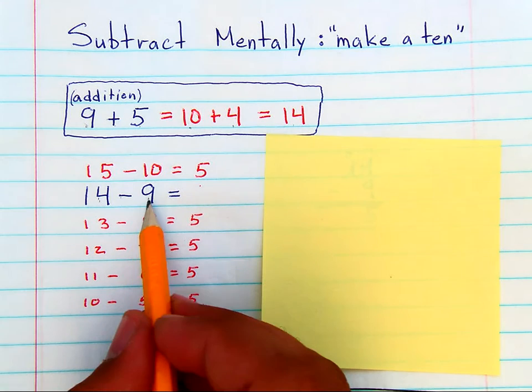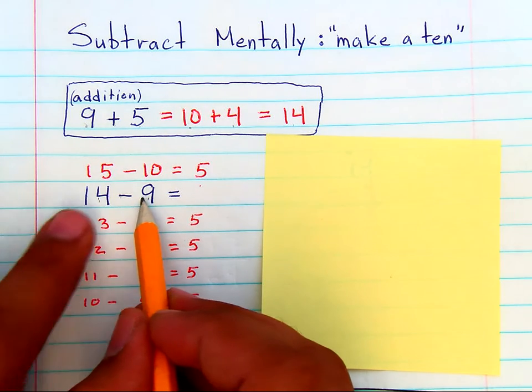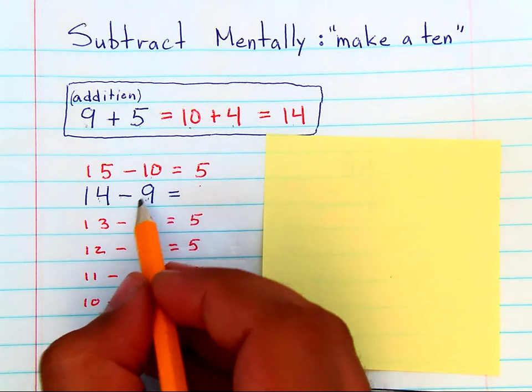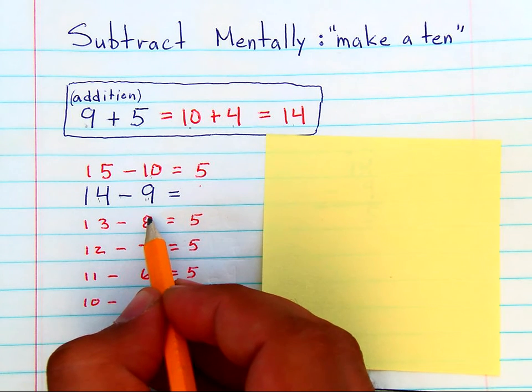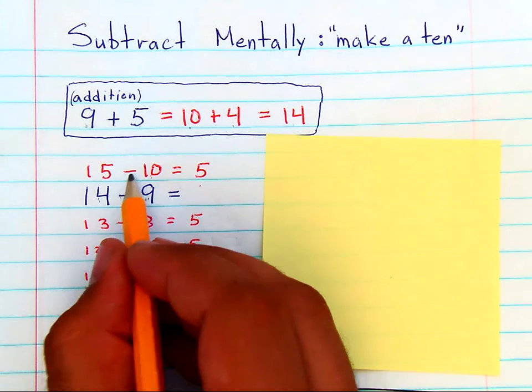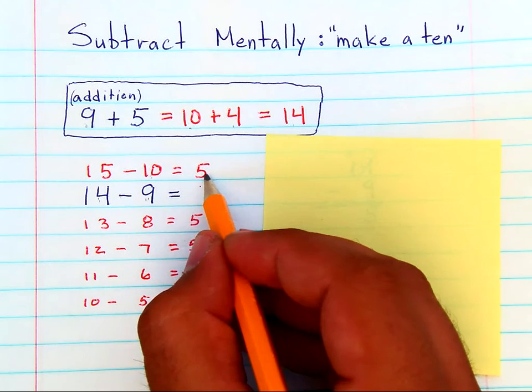If you add 1 to both, then 15 minus 10 is easy. The answer is 5.